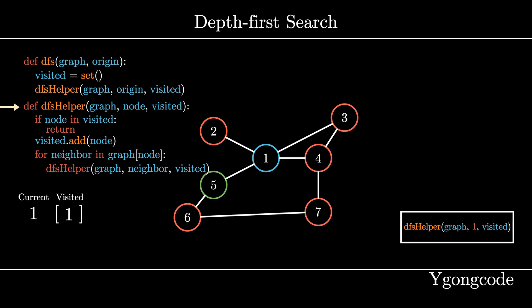Now we call our dfsHelper on node 5 and add it to the top of our call stack. This marks the beginning of our recursive journey.